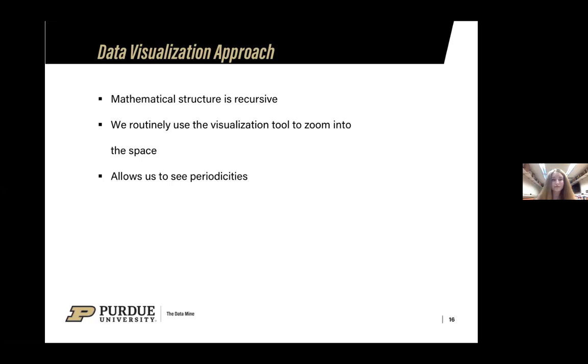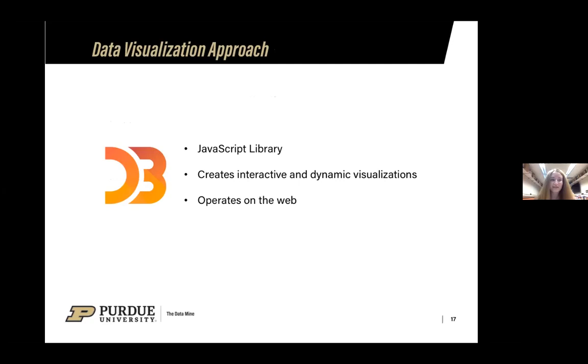We want to be able to see a holistic view of the data structure, along with wanting to see the fine-grained details in a certain region. Through a data visualization approach, we can see how the structure is behaving at different regions, which gives the team a better idea of the structure and how it is behaving. We routinely use the visualization tool to zoom into the space, revealing the fine-grained details of the attributes for the space in a way that would be impossible without the tool. The visualization approach is crucial because the mathematical structure is recursive. But you need to mention, this is your tool, my friend.